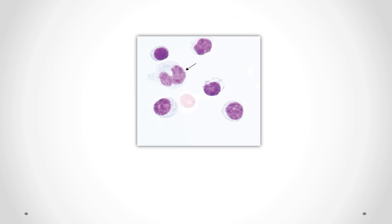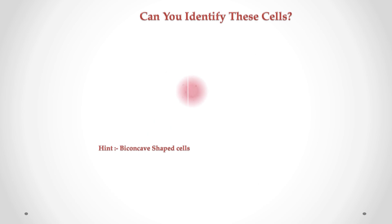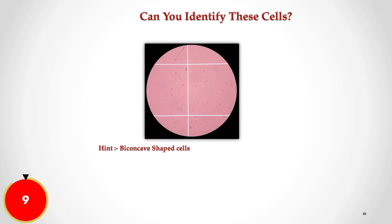Can you identify these cells in CSF? Correct answer is monocyte. We can see it is larger in size compared to lymphocytes. The nucleus is often indented or folded, there is abundant cytoplasm, and fine granules may be present in the cytoplasm.